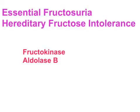Hello everyone, Dr. Mungli here. In this video I will be explaining essential fructosuria and hereditary fructose intolerance. These are the two disorders associated with fructose metabolism in our body. The deficiency of fructokinase leads to essential fructosuria, and deficiency of aldolase B enzyme will lead to hereditary fructose intolerance.